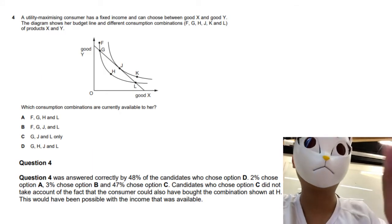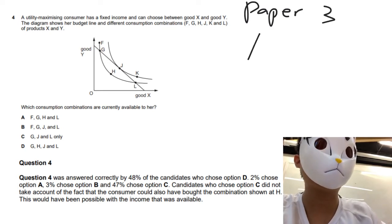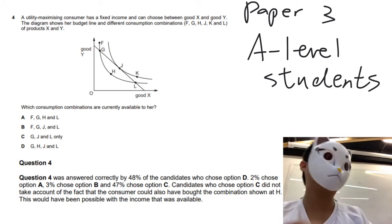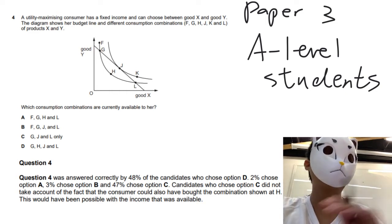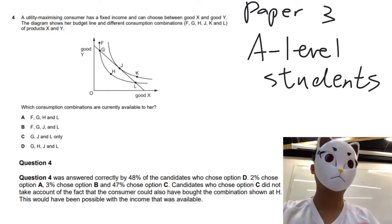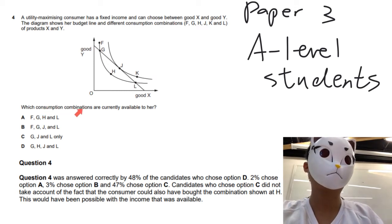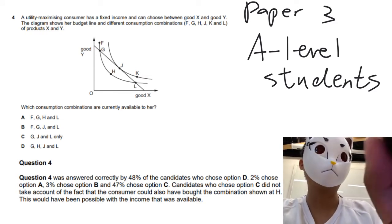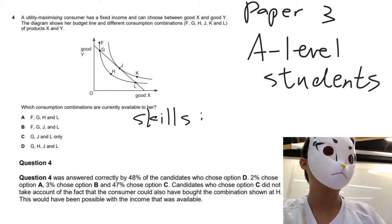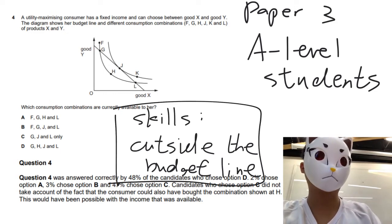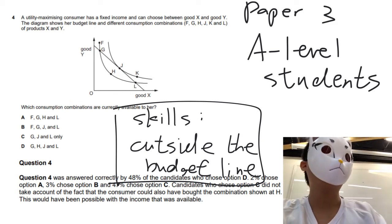We are now going to start with Paper 3, which is for A-level students only. If you took the AS-level, you might just skip this part. We will first take a look at a question related to the budget line. The question is stressed on the consumption patterns available to the group. One of the skills to do it is to figure out which points are outside the budget line. Point F and point K are outside the budget line.